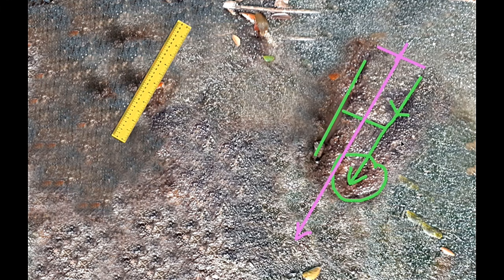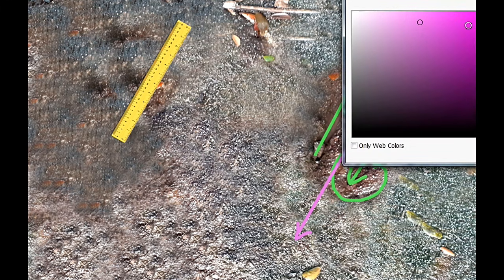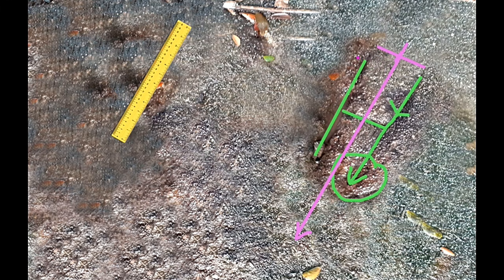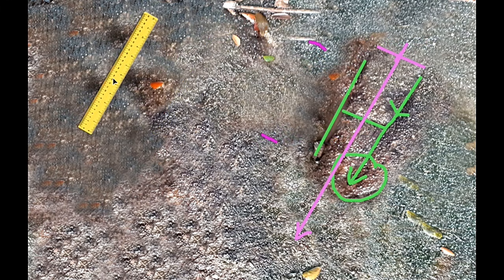Tapos ang gawin natin ay i-measure natin ito by inches, itong side ng H. And then after na ma-measure sa inches, ay i-convert natin ang result to meters. Okay, kuha tayo ng ruler. Alright guys, at ngayon naman ang pagkuhan natin sa layo or distance ng object or buried treasure galing sa marka na H ay kunin natin ang measurement nito. Itong side ng H.